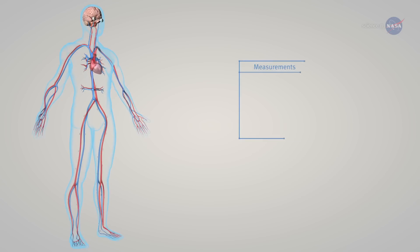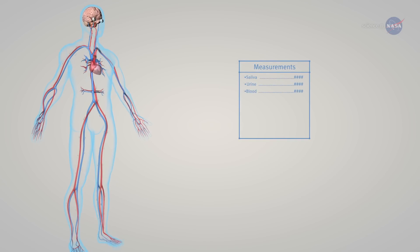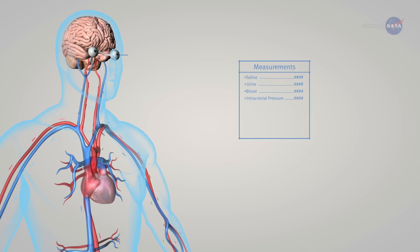To find the answers, they'll take measurements of 10 astronauts' saliva, urine, and blood at different points in their missions. Other details collected will be their intracranial pressure, intraocular pressure, ocular structure, blood pressure, and heart rate, in addition to ultrasound measurements of their fluid shifts.